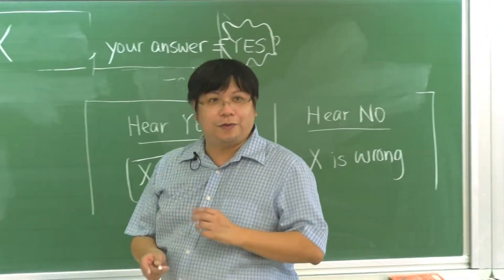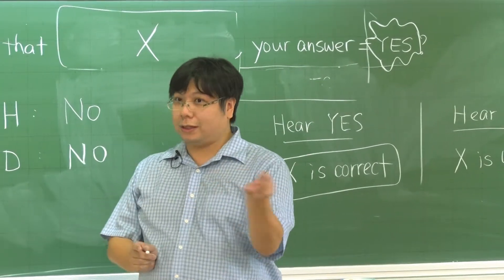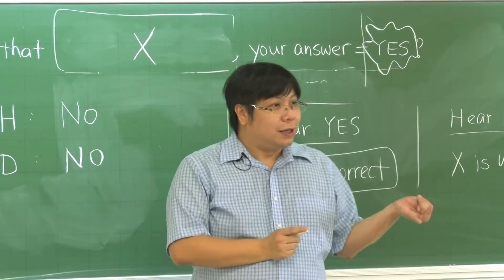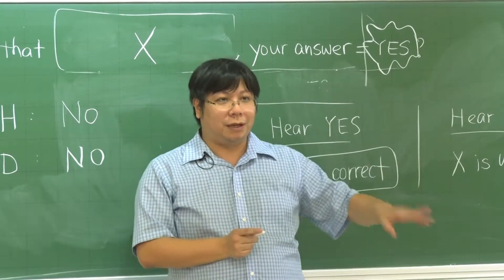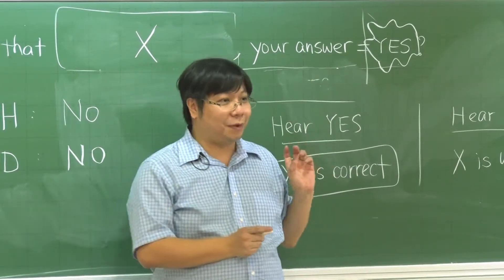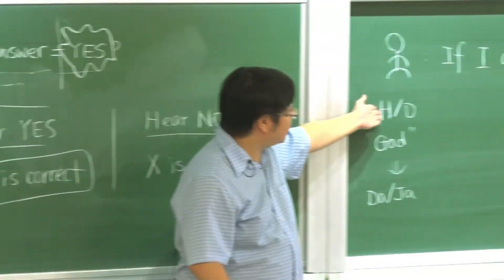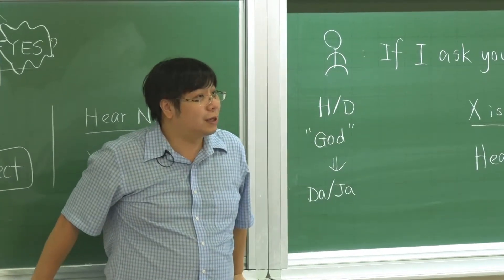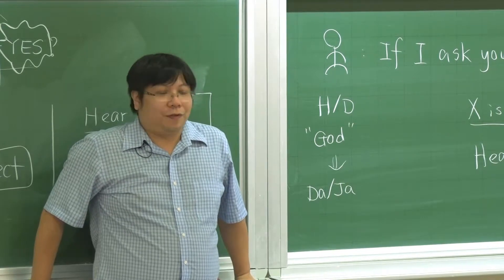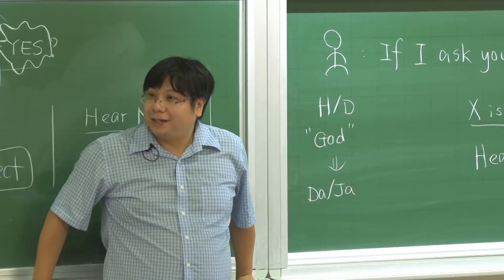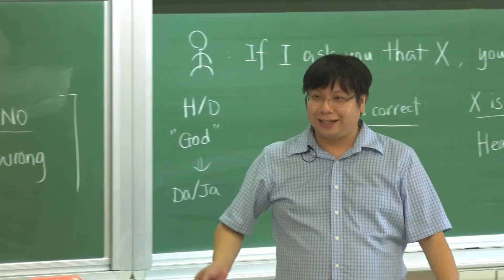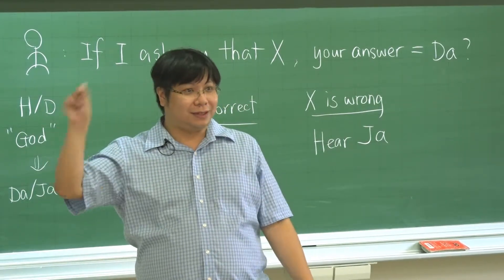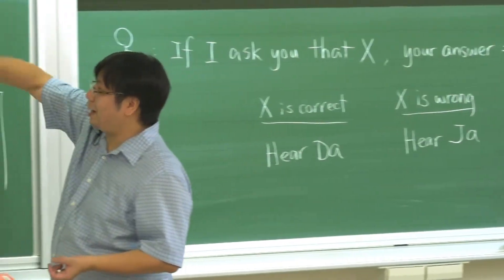So which kind of god is troublesome? The random god. As long as we are asking a god that is not random — honest or dishonest — we can extract information, because we can determine whether the god is honest or dishonest and use them to tell us whether x is correct or wrong. So we need to identify which one is random, or first identify which one is not random.